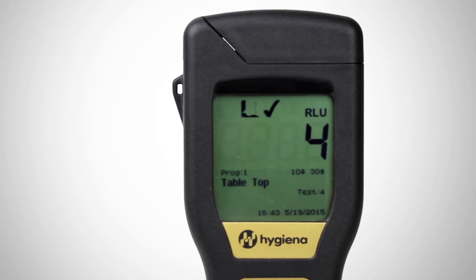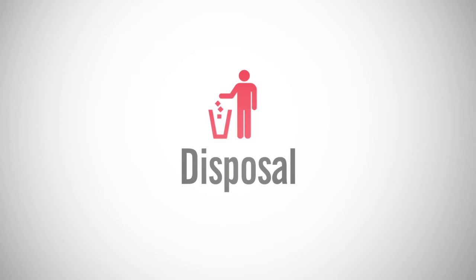Results will be displayed in 15 seconds. Find more information about setting appropriate RLU limits for your facility at Hygiena.com or by watching the setting pass fail RLU video on our YouTube channel. Since UltraSnap is made of 100% recyclable plastic, used devices may be discarded in the recycle bin.